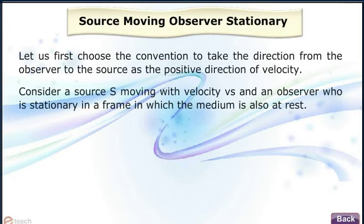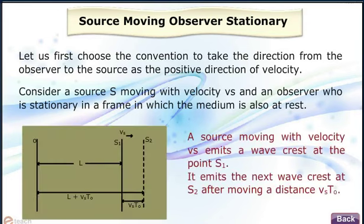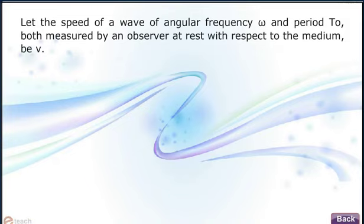Consider a source S moving with velocity Vs and an observer who is stationary in a frame in which the medium is also at rest. Let the speed of a wave of angular frequency omega and period T0, both measured by an observer at rest with respect to the medium, be v.